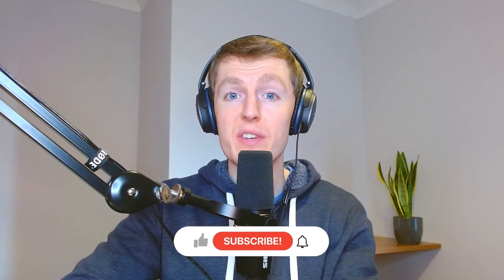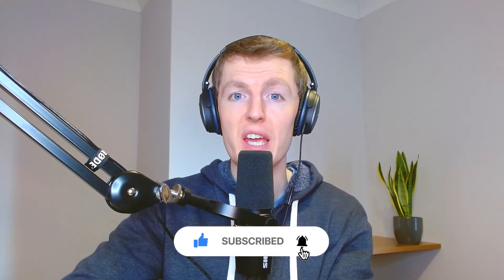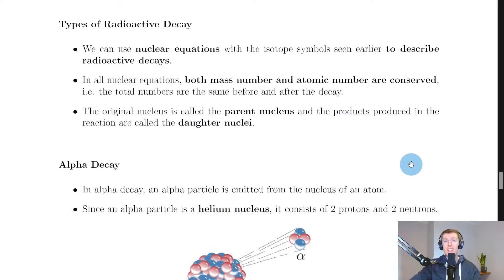In this video we're going to look at types of radioactive decay. We've already seen what radioactive decay is in a previous theory video — it's when an unstable nucleus tries to become more stable by emitting an alpha particle, beta particle, or gamma ray. We're going to look at the three main types of radioactive decay: alpha decay, beta decay, and gamma decay.